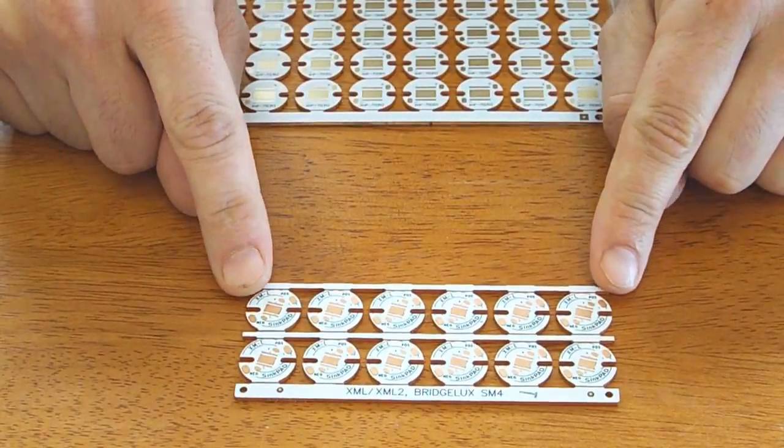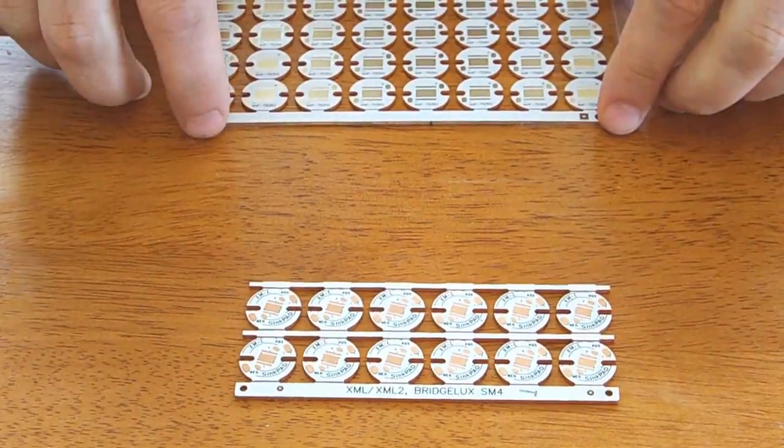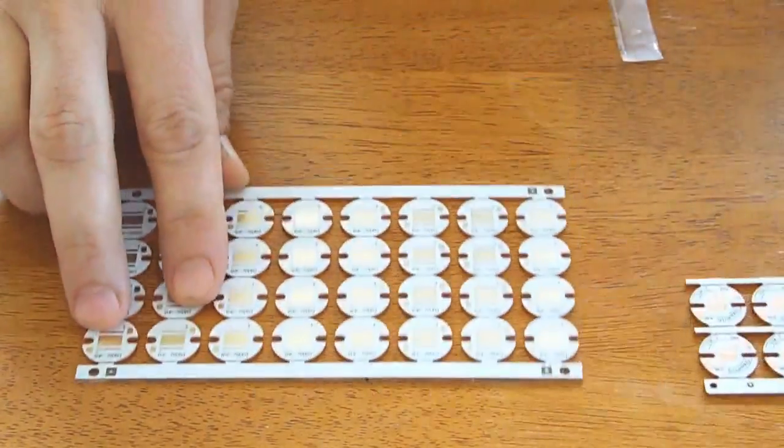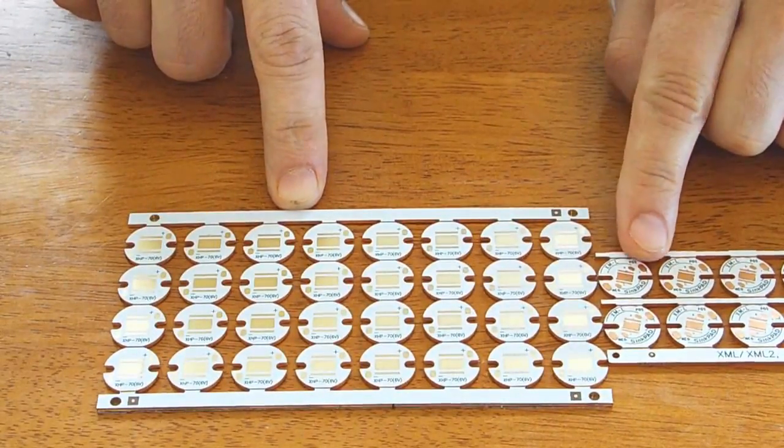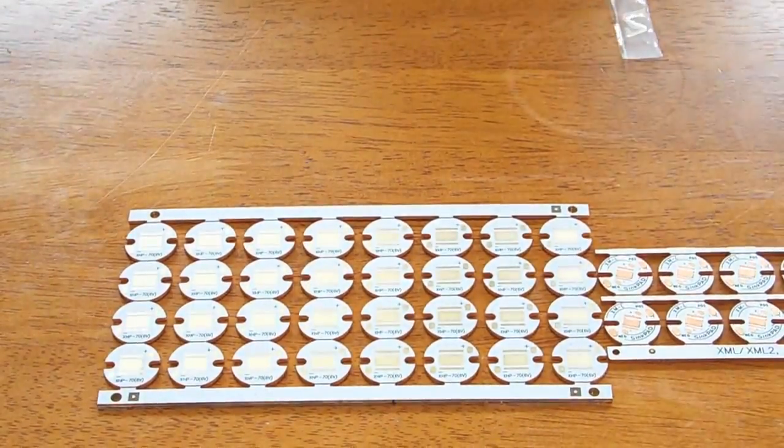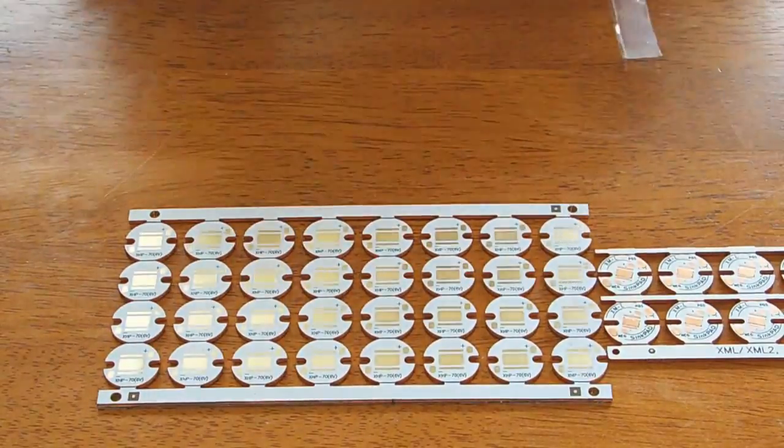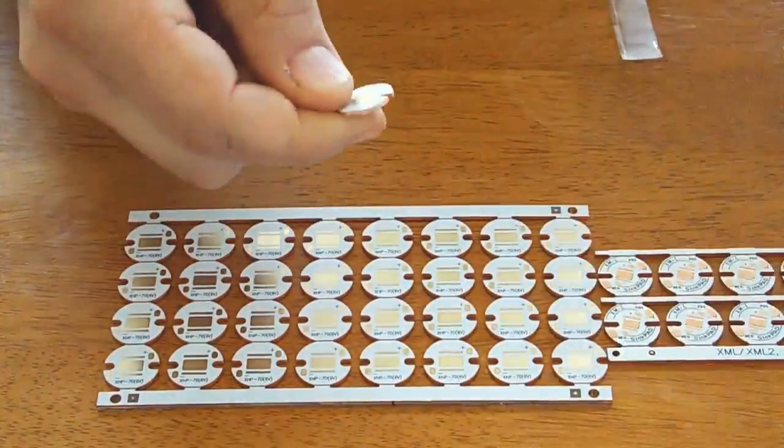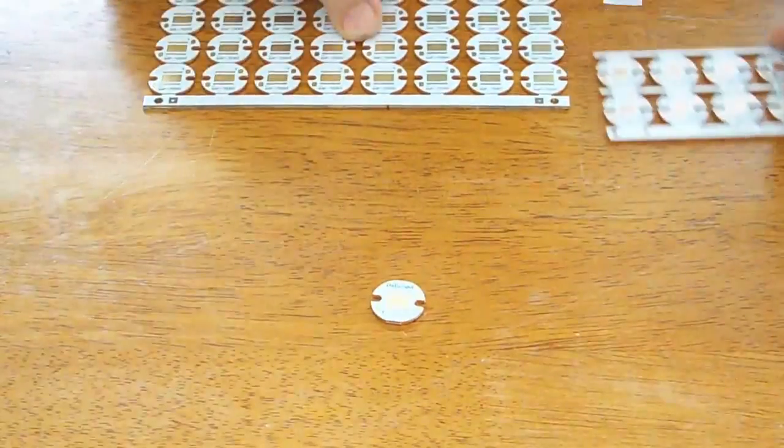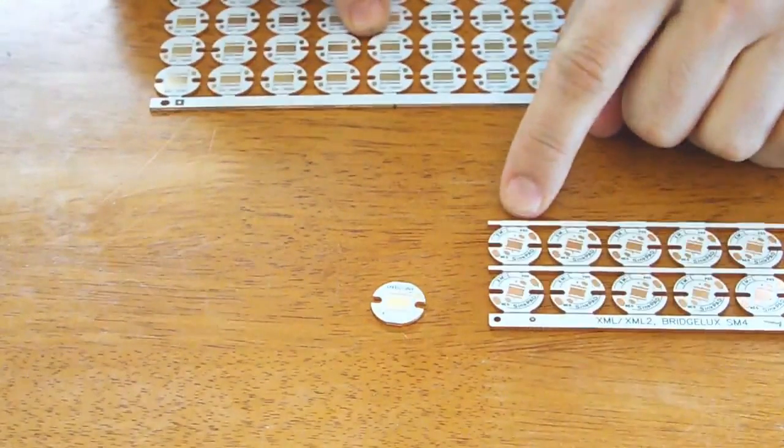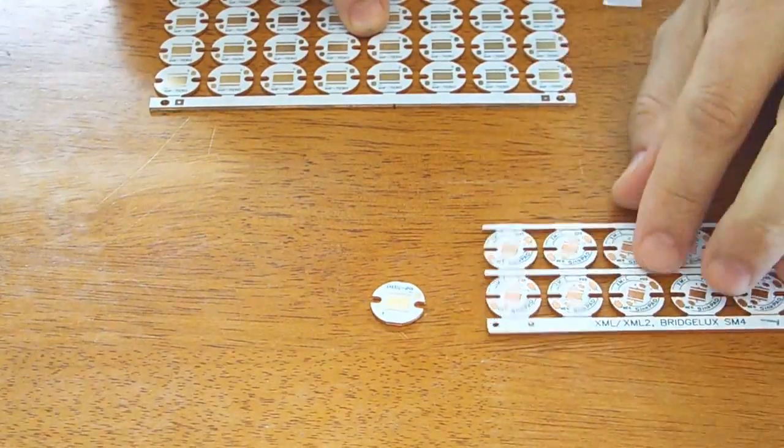The other thing that I like better about these boards versus sink pads is that they're round. When I break these off of here, I have a round board instead of this odd shape where the break-offs stick way out.